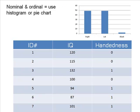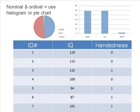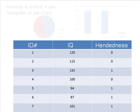The histogram shows three columns, and the pie chart shows three slices. The slices for left-handed and right-handed are about even, and there is a small segment indicating the scores that were missing.